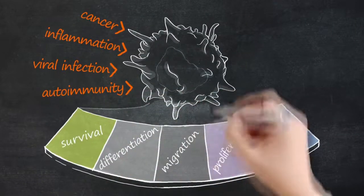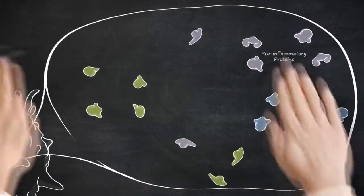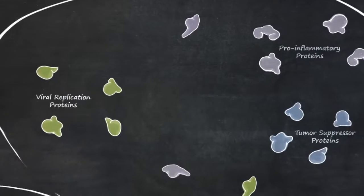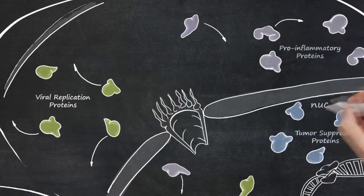The fate of the cell is often controlled by the localization of proteins. They affect the cell differently depending on their location, for instance in the nucleus or in the cytoplasm.